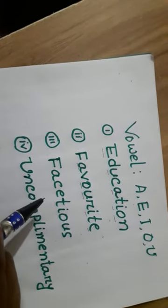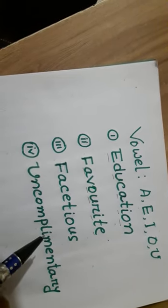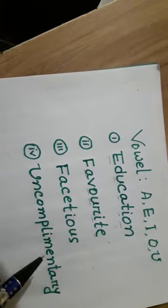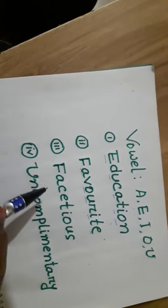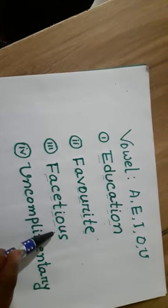And reason two: the third word, facetious, has vowels in order - A, E, I, O, U.